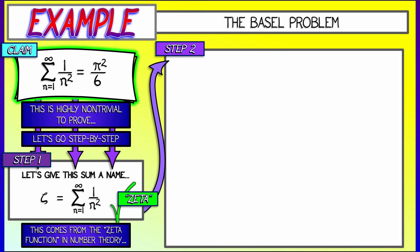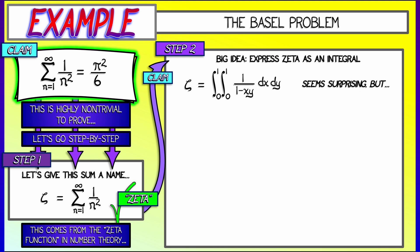And using that, we can move to step two. Step two is the big idea. We're going to express this infinite series as an integral, as a double integral, as the double integral of 1 over 1 minus xy, as x and y both go from 0 to 1. Now, this is not obvious. This is kind of a surprise. Where'd that come from? Well, let's not worry about that so much right now. Let's just do it. Let's prove that this is true. And we're going to do it by trying to evaluate this double integral.